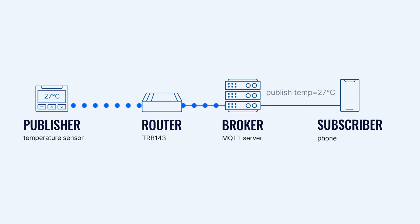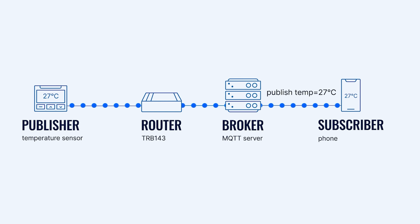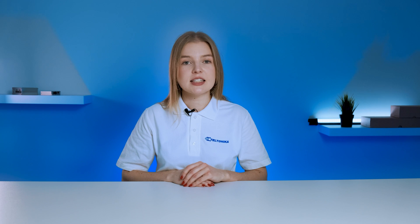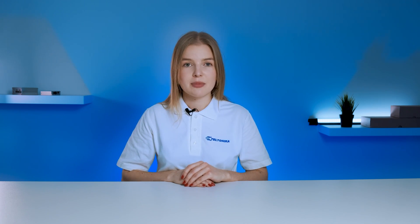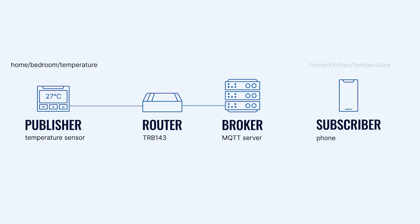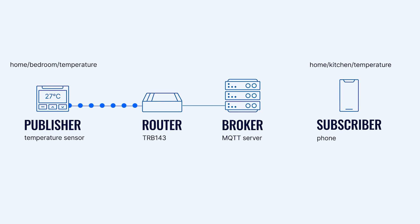The temperature sensor constantly sends data to the server. The server then checks the data and distributes it to subscribers according to the topics specific subscribers are assigned to receive. Because the phone was subscribed to the same topic the temperature sensor sends out to the server, the device attains this exact information. The same communication structure can also be applied to transmitting commands, enabling you to control devices remotely. In such a scenario, you'd be transmitting messages embedded with specific commands rather than just transferring plain data packets. Be aware that if the topics on both ends don't align, this communication protocol won't be able to do its job.